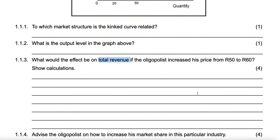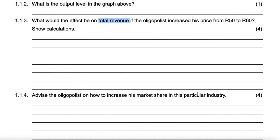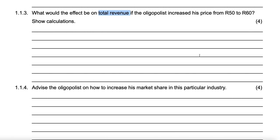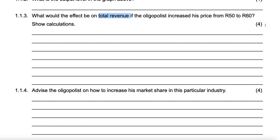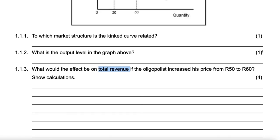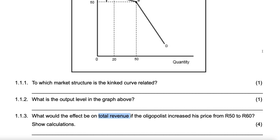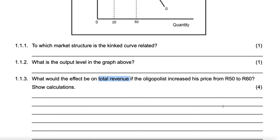This kind of question can still be assessed, but it will be the last question of a data response and will be worth 4 marks. Just know that two such questions can never both appear on one data response, because we cannot have two 4-mark questions in one data response. They'd make each of those 2 marks.